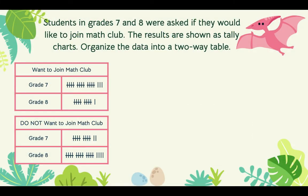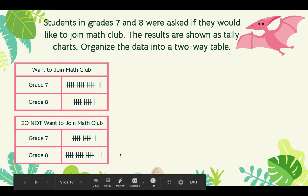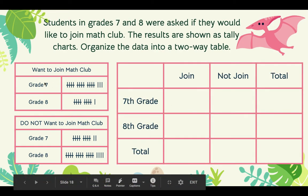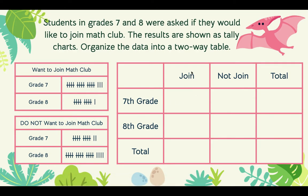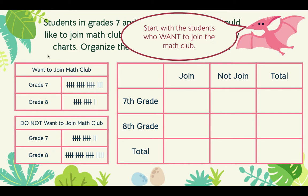Now let's try creating a two-way table. Students in grades 7 and 8 were asked if they would like to join a math club. The results are shown as tally charts — organize the data in a two-way table. We're comparing 7th and 8th grade and whether they joined the math club or not. Starting with students who want to join: 7th graders counted 5, 10, 15, 18 — so 18. 8th graders counted 5, 10, 11 — so 11.